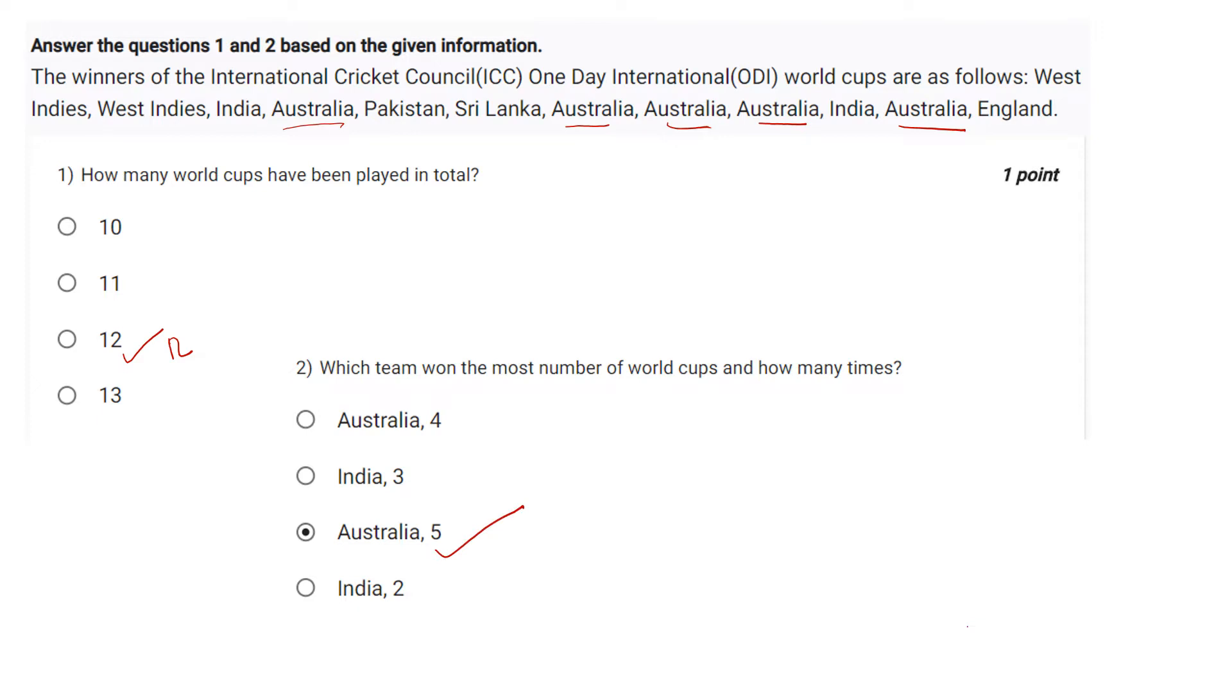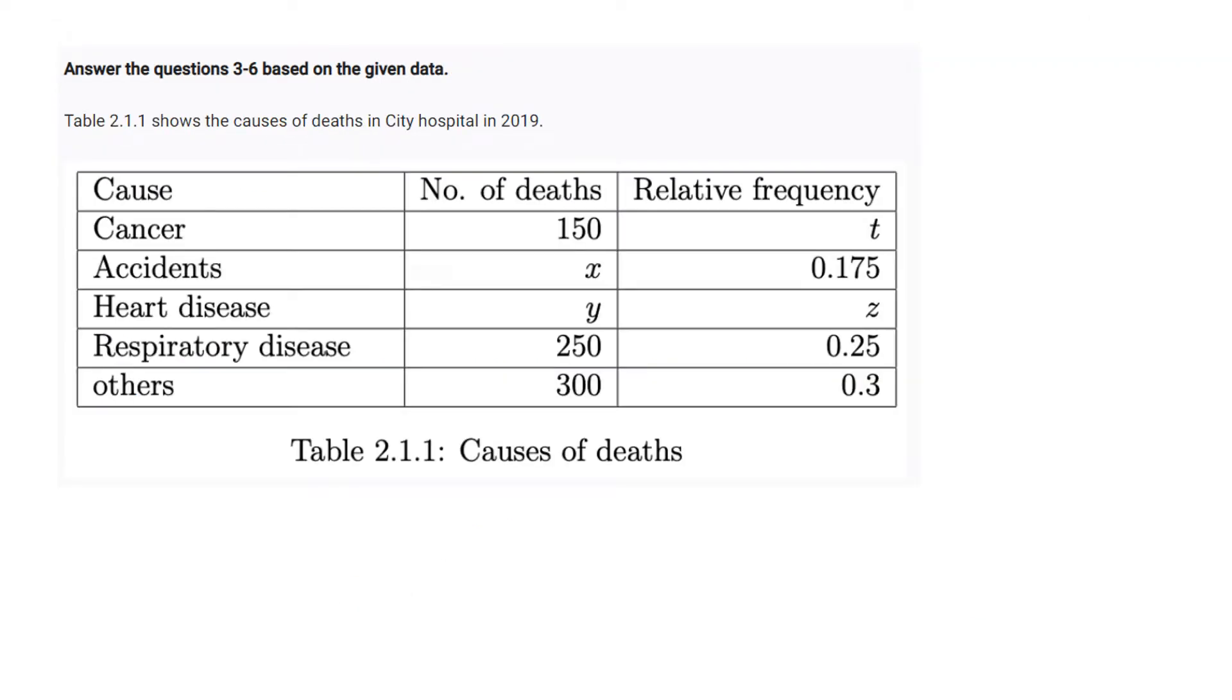What is the value of Z? Let's calculate. What is the value of X plus Y? X plus Y is equal to 1000 minus 400 plus 250 plus 150, and it will be 1000 minus 700.